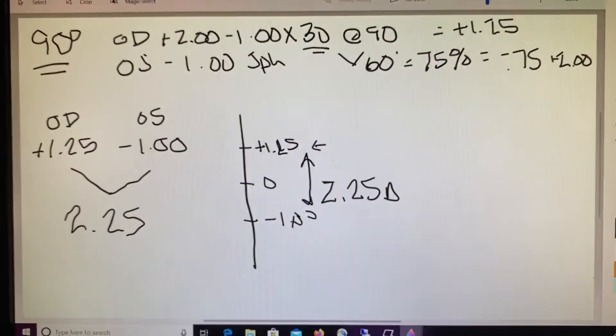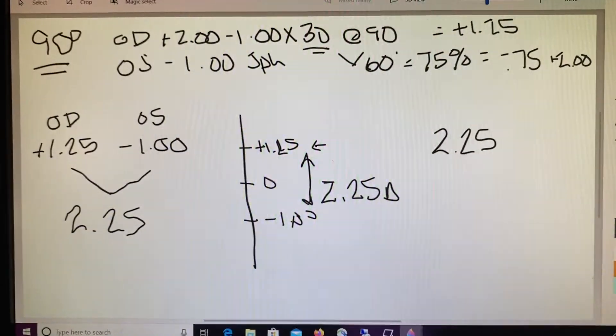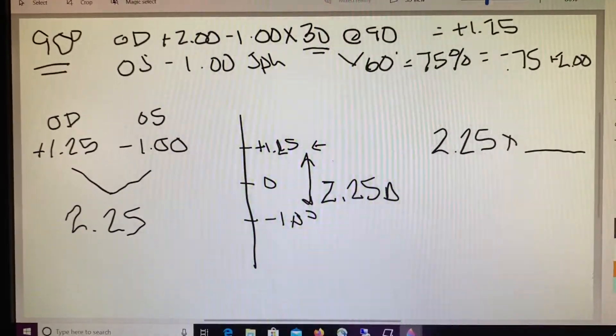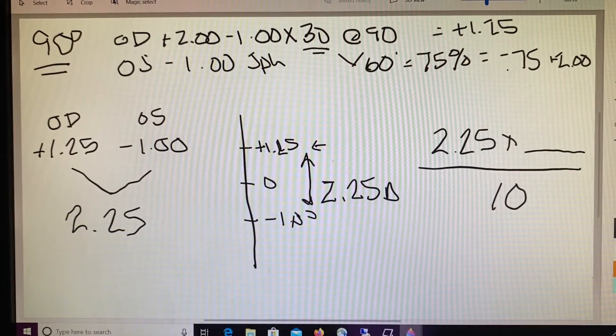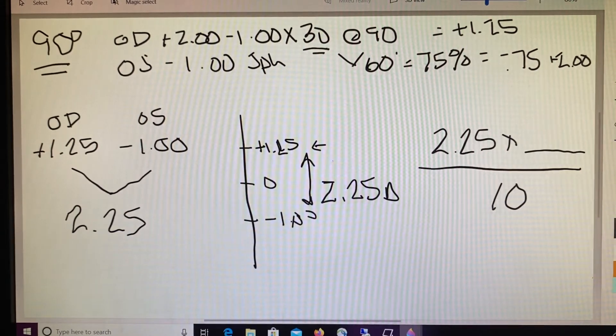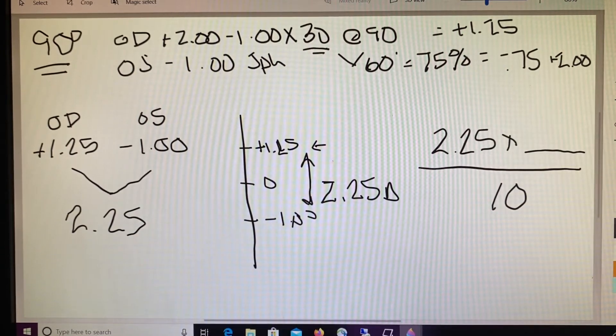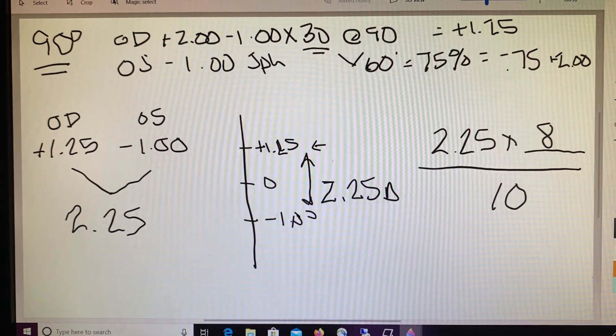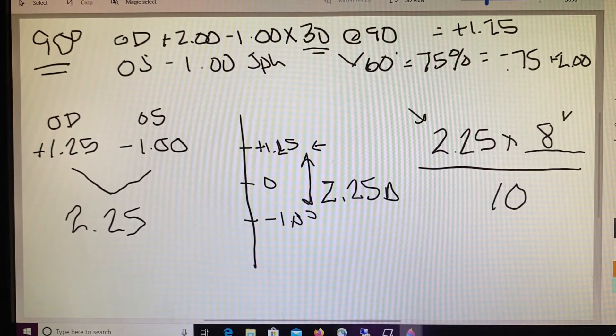So this becomes the power in our Prentice rule. So Prentice rule basically just says power 2.25 times displacement divided by 10. Now, displacement previously in horizontal prism was the difference between the PD and the OC. In vertical prism, it's just the amount of movement that it takes to get from the distance into the reading portion of the lens. So into the segment, like a bifocal or a trifocal. In example number one, they're telling us that we had to travel 8 millimeters to get into the reading portion of our lens. So we say power at 90 times the amount of travel to get into the reading or displacement divided by 10.